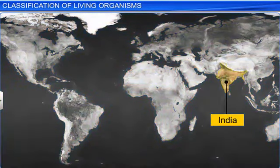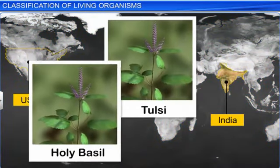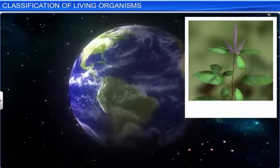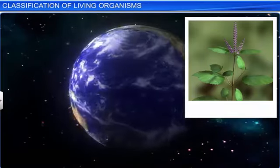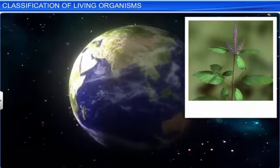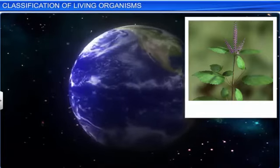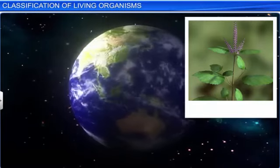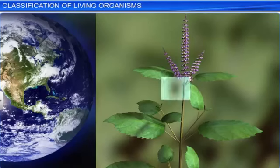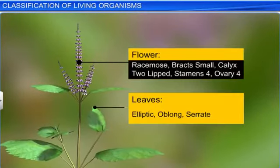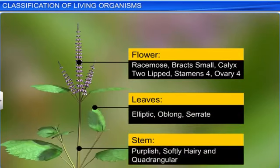It is common to find living organisms being known by different local names in different parts of the world. To avoid this confusion, the name of a living organism must be standardized such that it is known by the same name the world over. This process is known as nomenclature. However, to name an organism, we need to know its correct description and to what organism the name is attached to. This is known as identification.